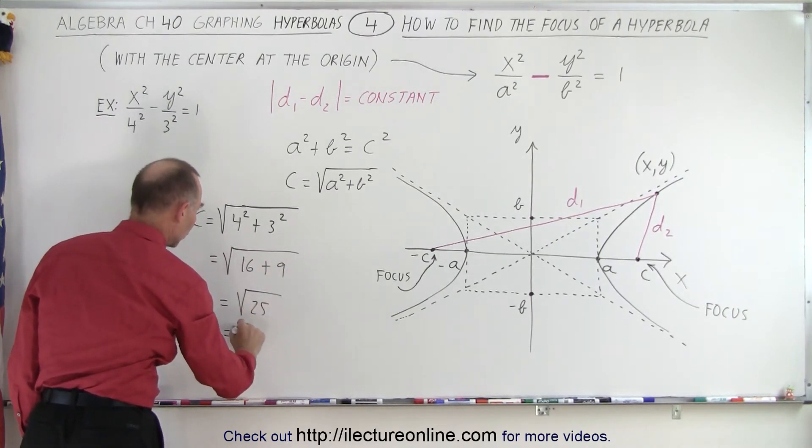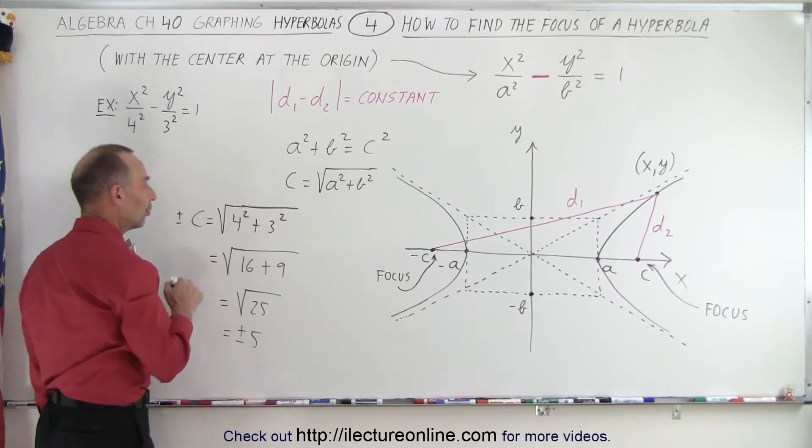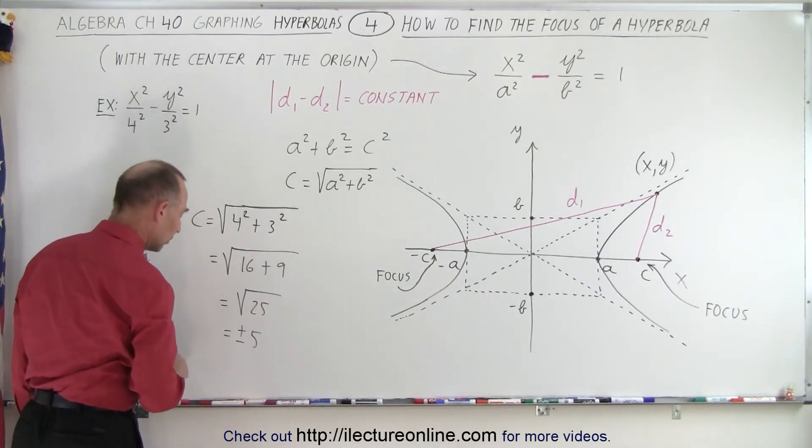Which is equal to, of course, plus or minus 5. Well, you got to be careful. So plus or minus c, there'll be the positive value and negative value, is going to be the plus or minus of the square root of 25.